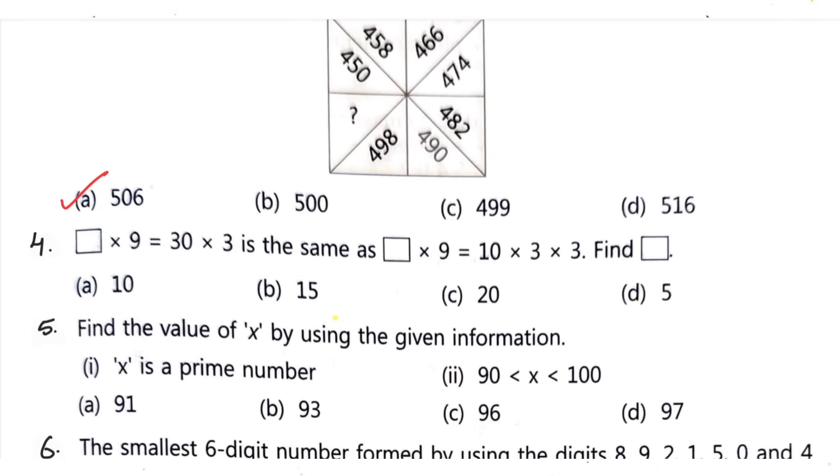Question number 4: dash into 9 equals 30 into 3 is same as dash into 9 equals 10 into 3 into 3, find dash. Correct option is option A, 10. Question number 5: find the value of x by using the given information. Information first is x is a prime number, then x is greater than 90 but less than 100. Correct option is option D, 97.